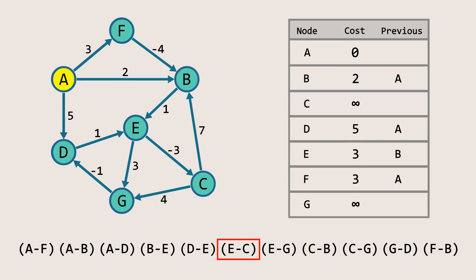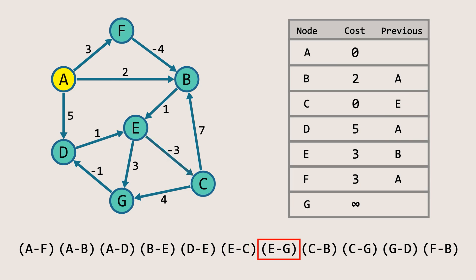Next, for the edge EC, the cost of node E is three and the weight of the edge is negative three, giving a total of zero. This is less than the current cost of node C, so we update the cost of node C to zero and set node E as the previous node for node C. Next, for the edge EG, the cost of node E is three and the weight of the edge is three, giving a total of six. This is less than the current cost of node G, so we update the cost of node G to six and set node E as the previous node for node G.